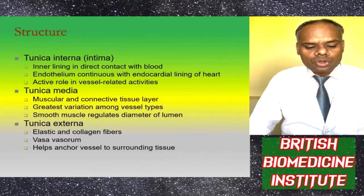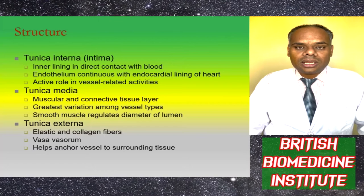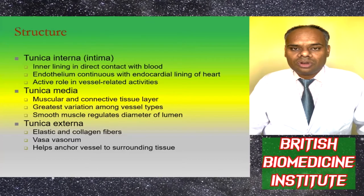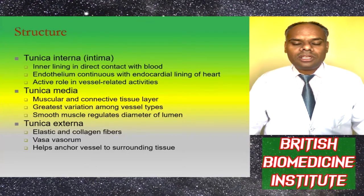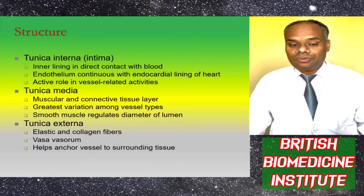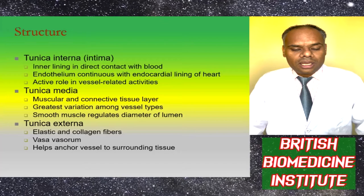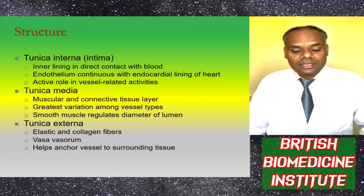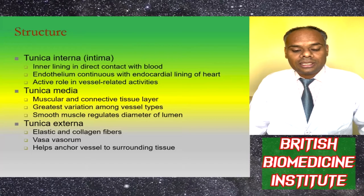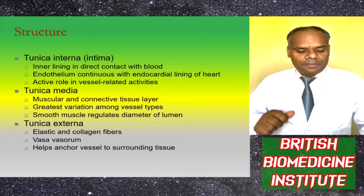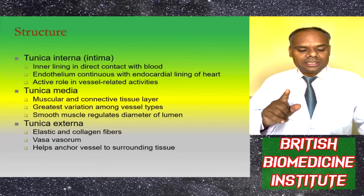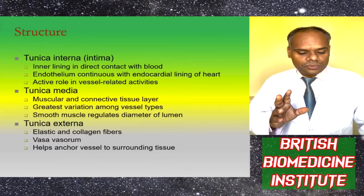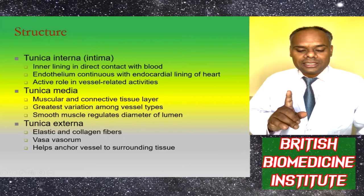Tunica interna, or intima, is the internal lining in direct contact with blood. The endothelium continues to the endocardial lining of the heart and plays an active role in vessel-related activities. Tunica media is a muscular and connective tissue layer with the greatest variation among vessel types; smooth muscles regulate the diameter of the lumen. Tunica externa consists of elastic and collagen fibers derived from vasa vasorum and helps anchor vessels to surrounding tissue.